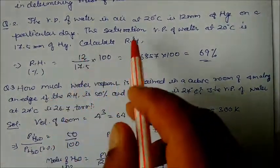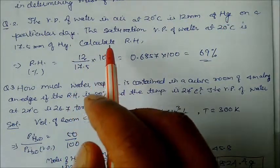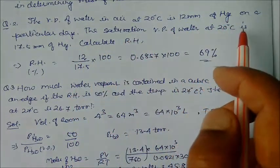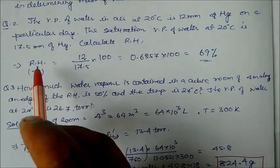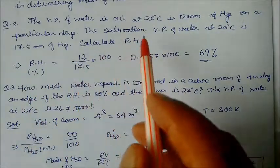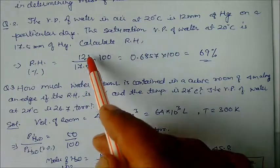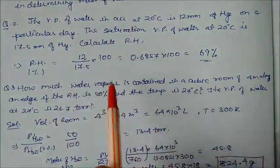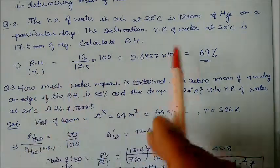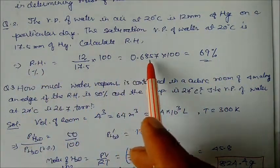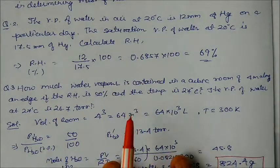Problem 2: The vapor pressure of water in air at 20°C is 12 mmHg. The saturation vapor pressure of water at 20°C is 17.5 mmHg. Calculate RH. RH = 12 / 17.5 × 100 = 69%. As a fractional value this is approximately 0.69.